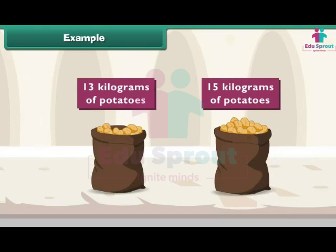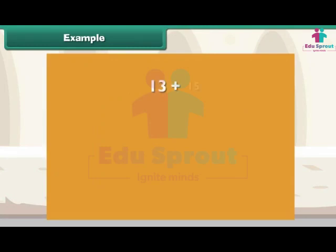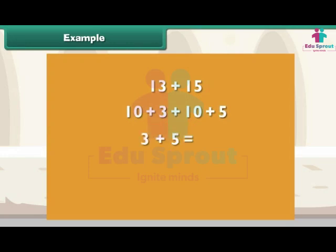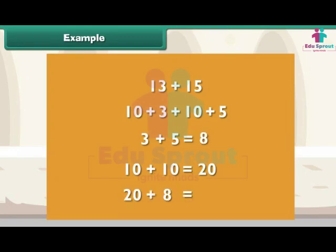How many kilograms of potatoes are there in all? To find the total quantity of potatoes, we must add 13 kg and 15 kg. Break the numbers into tens and ones. Write 13 plus 15 as 10 plus 3 plus 10 plus 5. Then 3 plus 5 equals 8, and 10 plus 10 equals 20. So 20 plus 8 equals 28. The answer is 28.